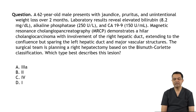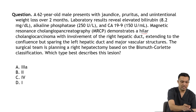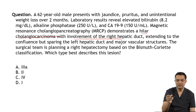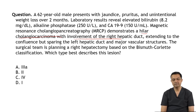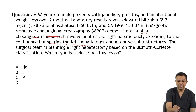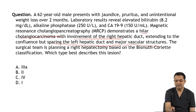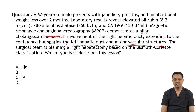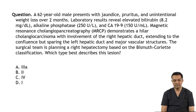CA 19-9 is elevated at 150 units per milliliter. MRCP demonstrates a hilar cholangiocarcinoma involving the right hepatic duct extending to the confluence but sparing the left hepatic duct. The lesion is also sparing the major vascular structures.